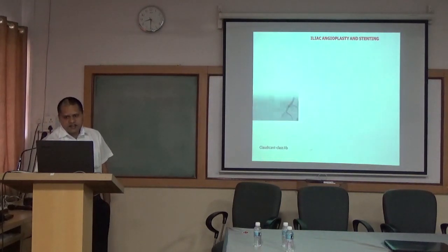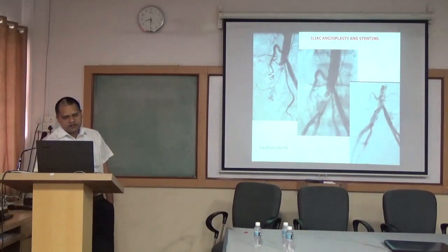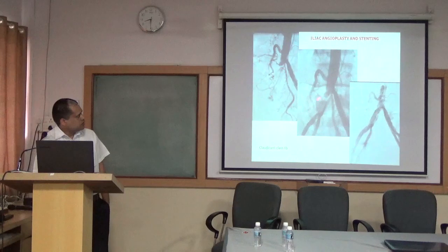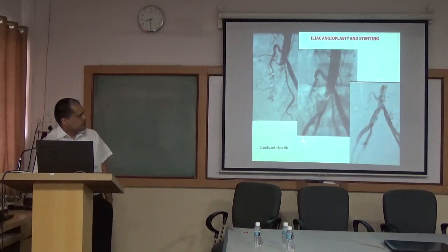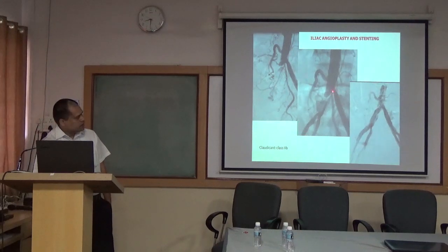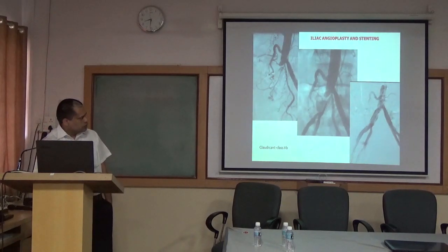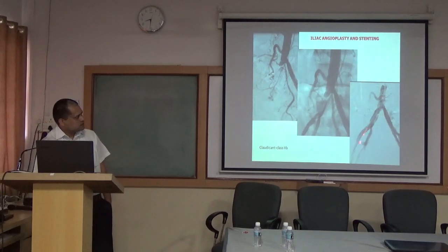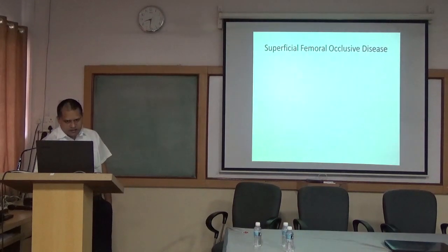In another case with claudication distance less than 200 meters, we did angiography and found the right iliac artery was completely occluded. We punctured the right femoral artery and performed angiography from both sides. The segment of iliac artery was occluded with a collateral filling it, but the collateral circulation was insufficient, causing the patient's pain. We crossed the lesion with a guide wire, placed a stent, and the post-stenting picture shows the arteries completely opened up.